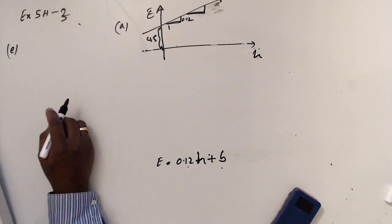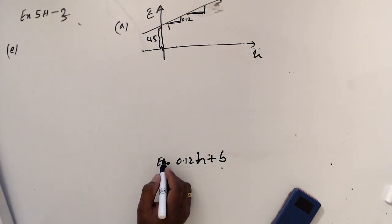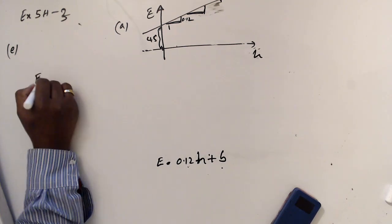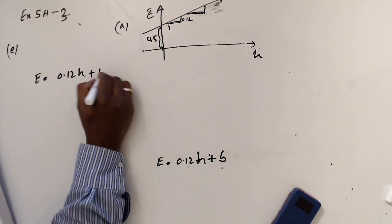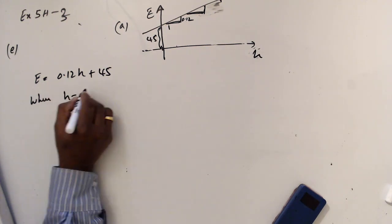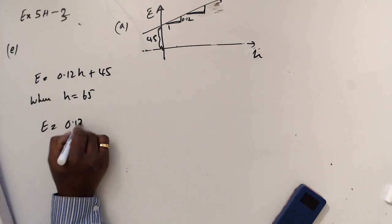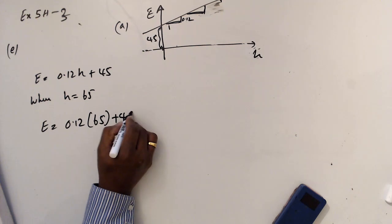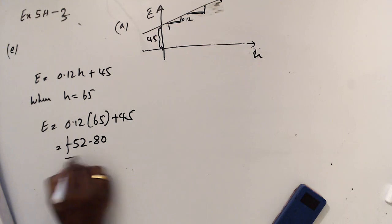Now, part E. Use the model to find the cost of 65 kilowatt hours. So, E equals 0.12 times H plus 45. When H equals 65, E equals 0.12 times 65 plus 45. It means 52.80.